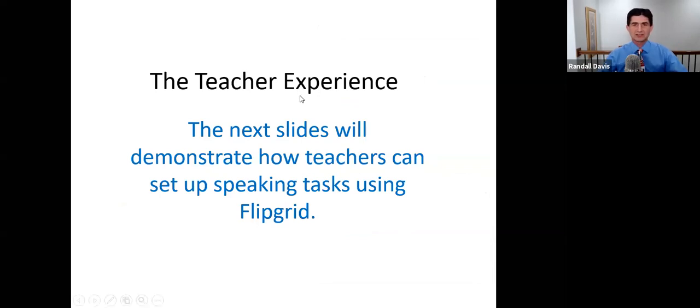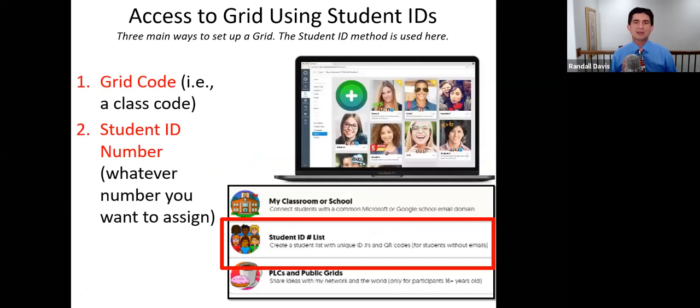Well, let's take a look at this. Now, there are many ways of creating grids. And when it says grid code, that's just the class code. Student ID number, that's the ID number that a student gets into the grid. And again, I don't want to focus a lot of time on this. But there are many ways. You see, my classroom or school connects with students in that way. Student ID list, I use that. I think it's a really easy way if you're working independently at your own school. You're not working with some type of content-based management system, learning system with your school. So, there are different ways. And I would take a look at what method works best for you.